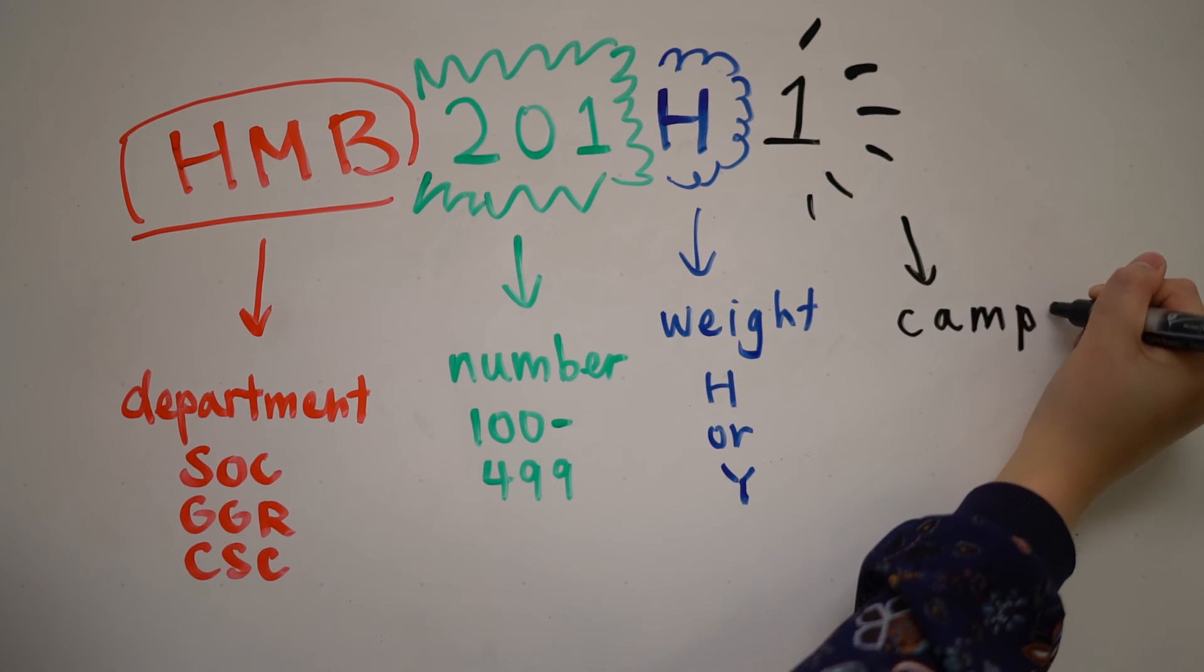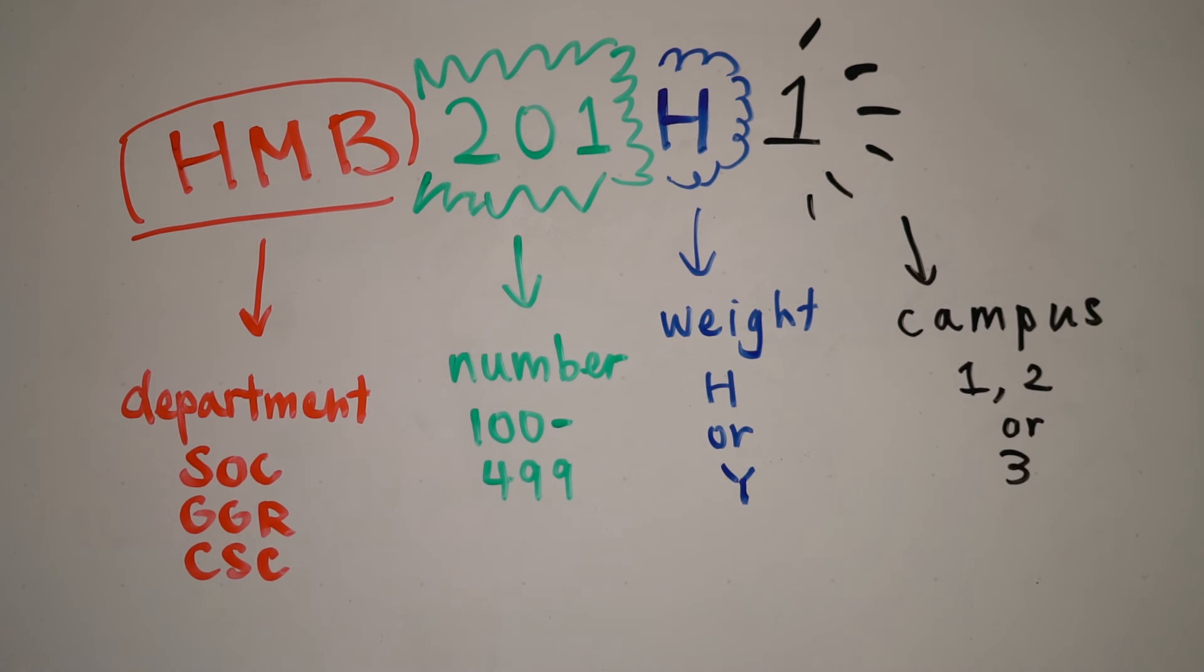There are three numbers denoting the campus where the course is taught. One is the St. George campus.